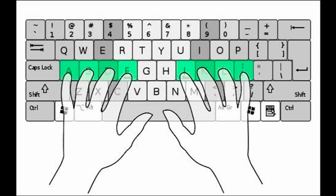You should have the following row of type. Press the enter key with your pinky finger — it is located on the right side of the keyboard. Now practice the letters one more time. Ready, set, go.